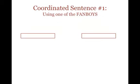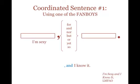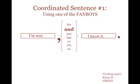The first way is using a coordinating conjunction, better known as one of the FANBOYS: for, and, nor, but, or, yet, so. You can remember it this way — you have two complete sentences, so you need two elements to join them: a comma and a fanboy. For example, 'I'm sexy and I know it.' Both 'I'm sexy' and 'I know it' are independent clauses; each can stand on its own. Notice that you do need a comma after the first independent clause.